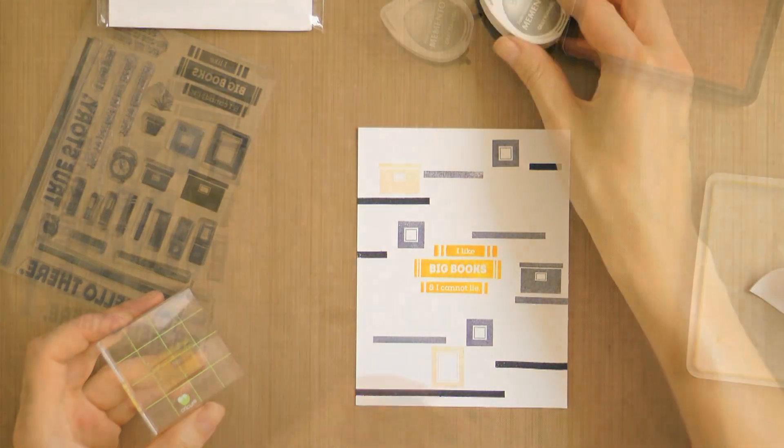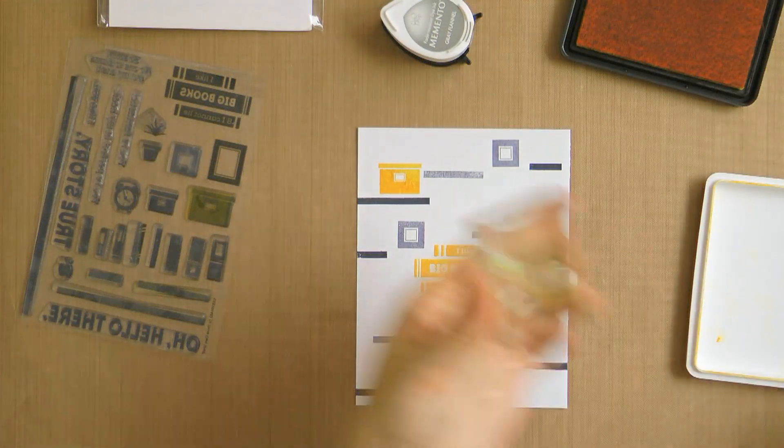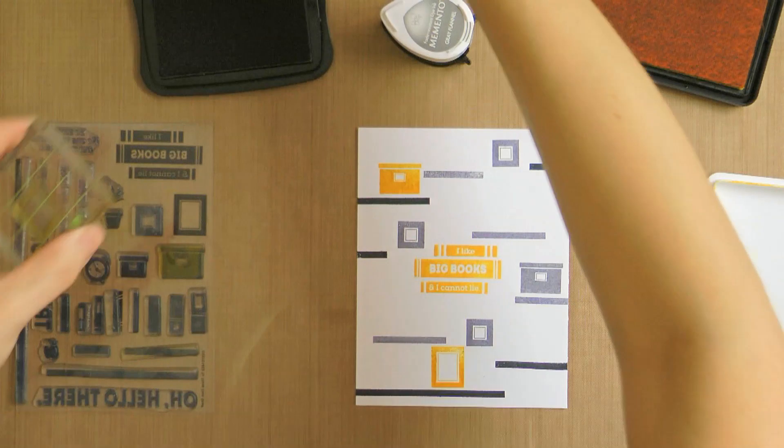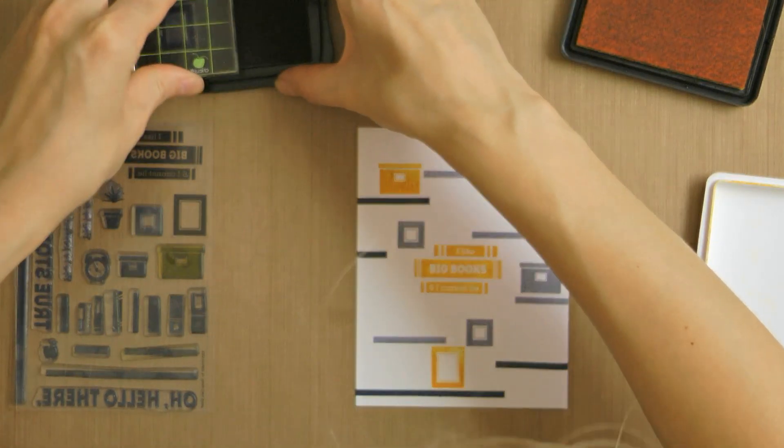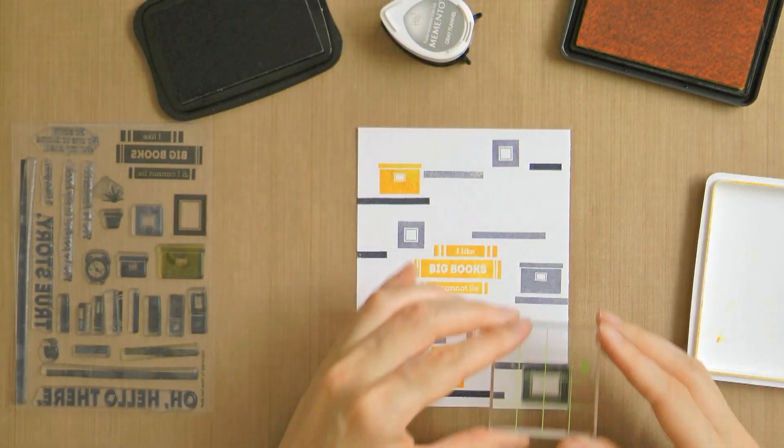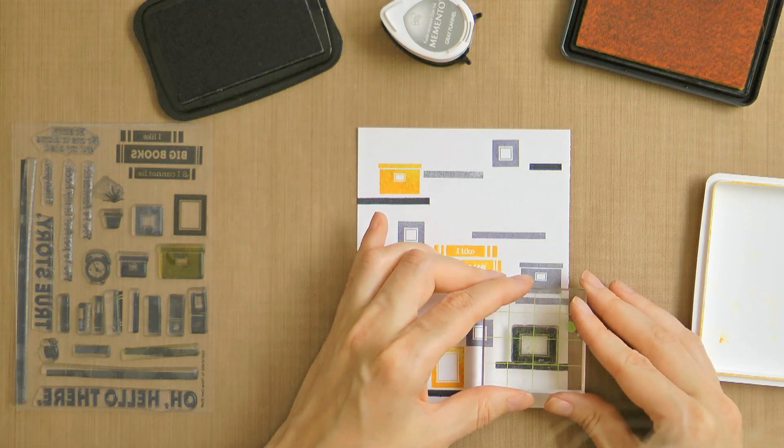Okay, so back to my card. Now after I stamped my shelves in black and gray I decided to add the small square frames in gray ink to the open spaces around the sentiment and in between the shelves. Think of those as little picture frames.